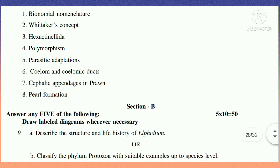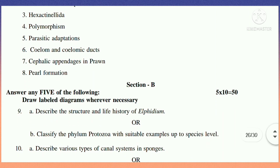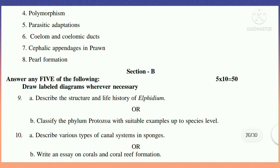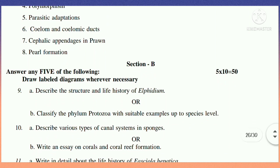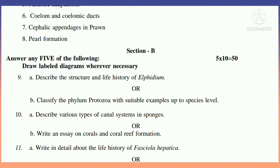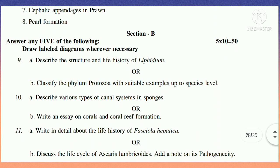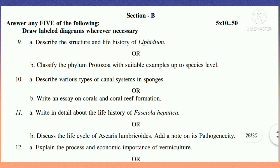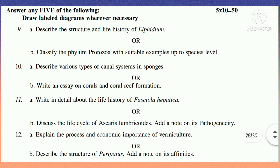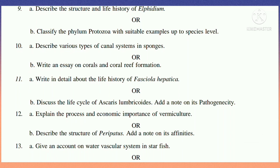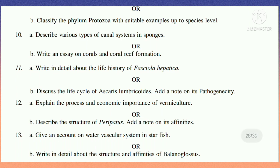In Section B, the essay questions are: 9A — Describe the Structure and Life History of Elphidium. 9B — Classify the Phylum Protozoa with suitable examples up to the species level. 10A — Describe various types of Canal System. 10B — Write an essay on Corals and Coral Reef Formation. 11A — Write in detail about the Life History of Fasciola Hepatica. 11B — Discuss the Life Cycle of Ascaris Lumbricoides and add a note on its Pathogenicity. 12A — Explain the process and Economic Importance of Vermiculture. 12B — Describe the Structure of Peripatus and add a note on its Affinities. 13A — Give an account on the Water Vascular System in Starfish. 13B — Write in detail about the Structure and Affinities of Balanoglossus.